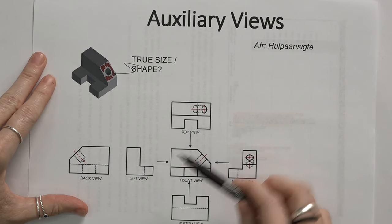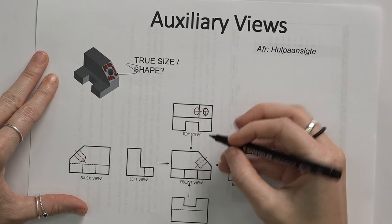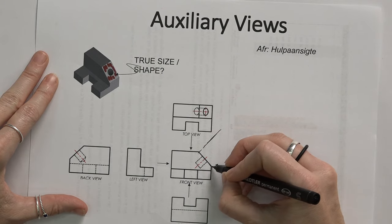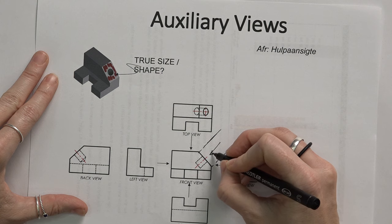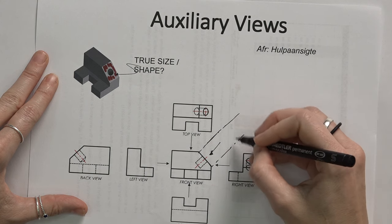In the same way that I have a right view on the right, top, bottom, left, the auxiliary view will lie in line with how I look at it. So I'm looking in this direction. So in that same line, that's where the auxiliary view will lie.